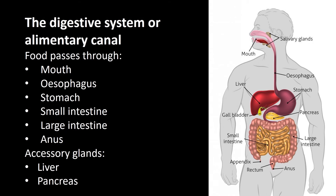Food goes into one end of the tube and passes along it, getting digested. First the mouth, then you swallow and it goes down the esophagus, spends time being churned in the stomach, then reaches the small intestine — your main digestive organ — where it spends 12 hours or more. Then it goes to the large intestine and eventually passes out of the anus. The two important accessory glands are the liver with the gallbladder underneath it, and the pancreas.